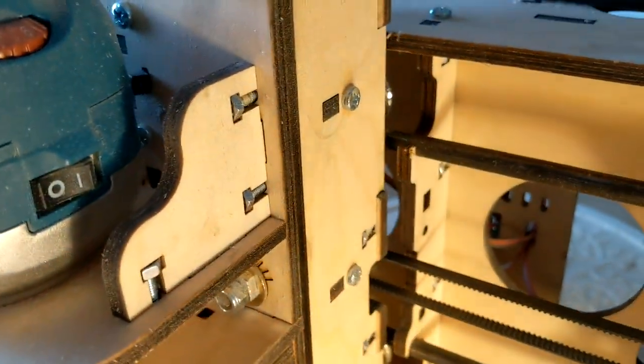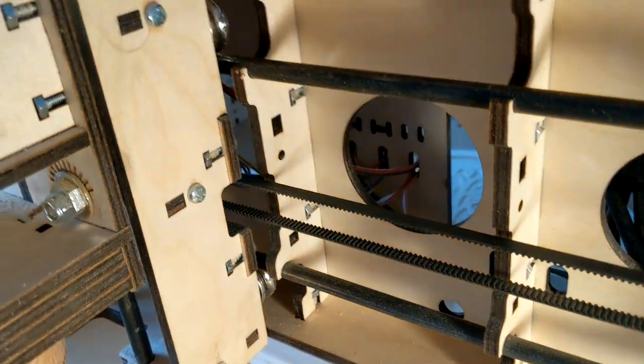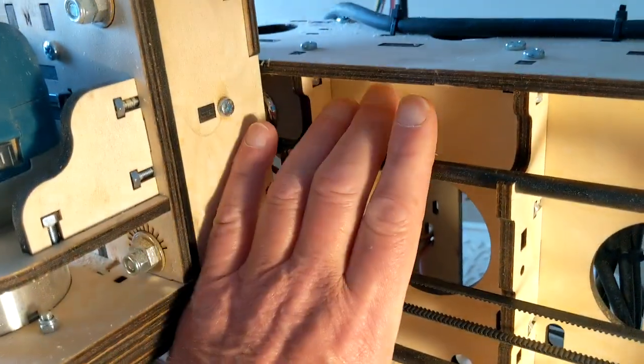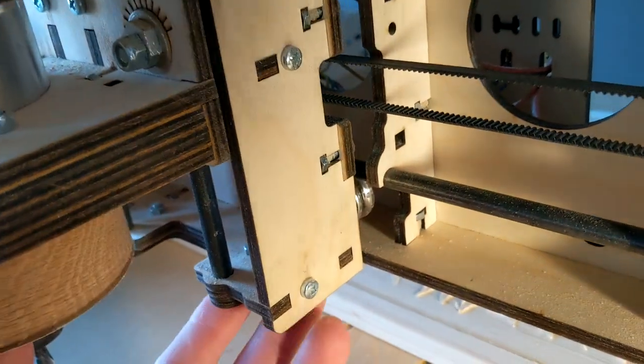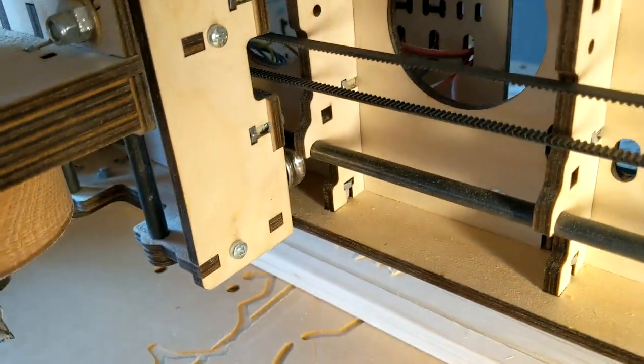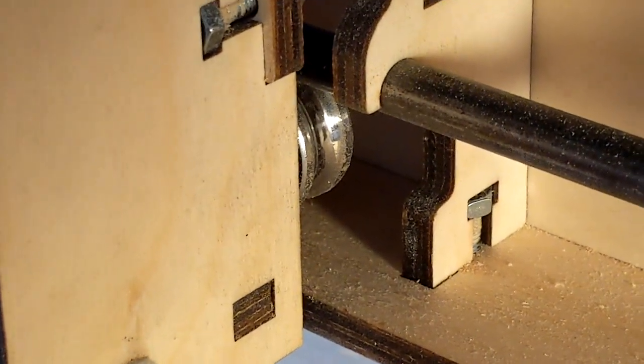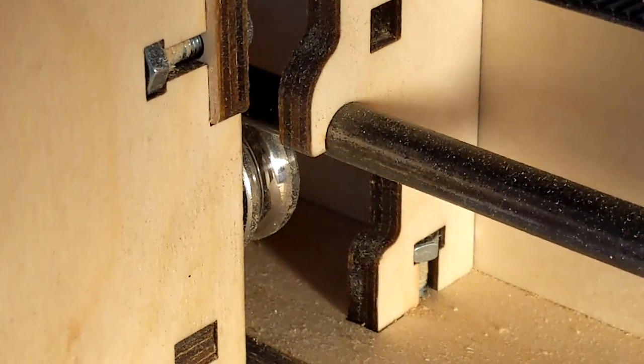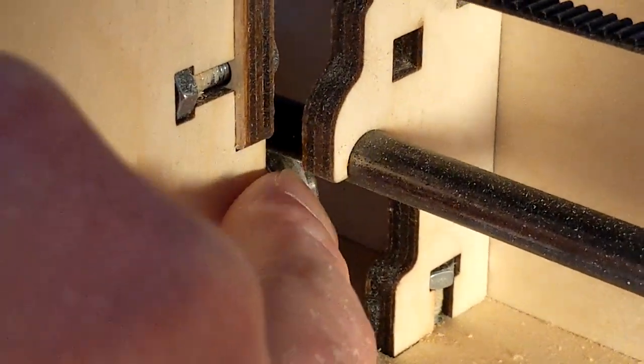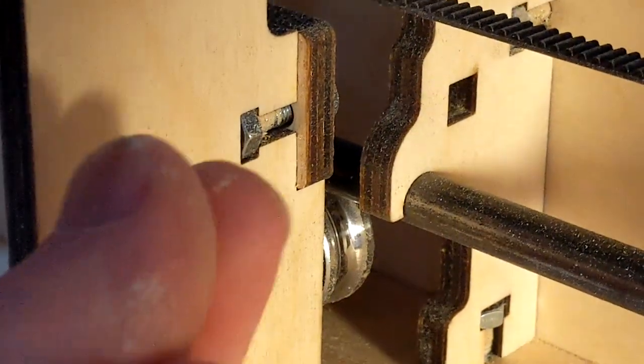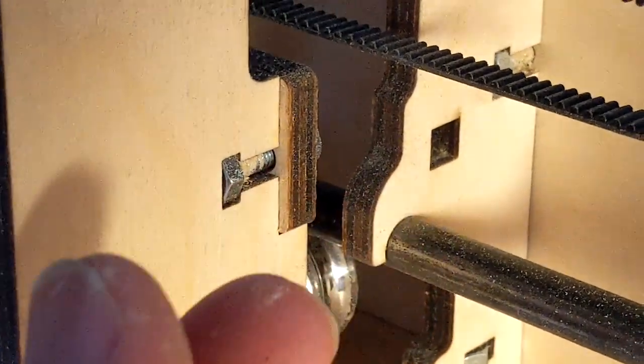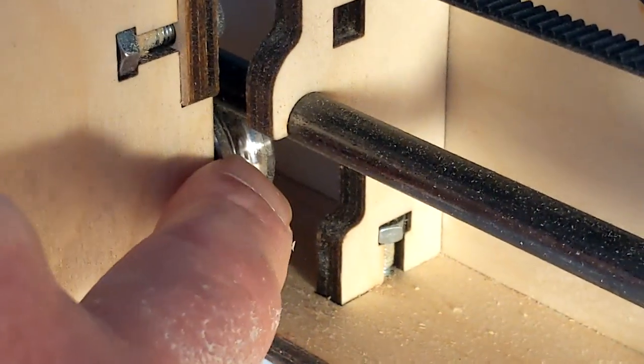If you can take your gantry and move it more than maybe 0.02 of an inch, then your bearings are loose. What I mean by that is your bearings need to be literally grabbing these rails and hugging them. If you can move your gantry, let me zoom in a little bit.